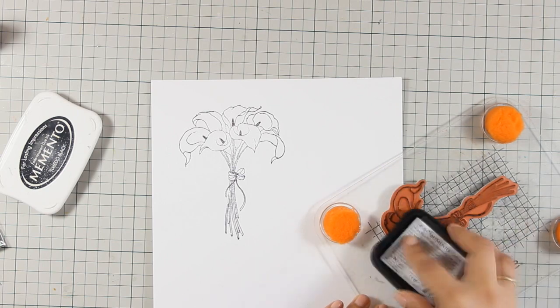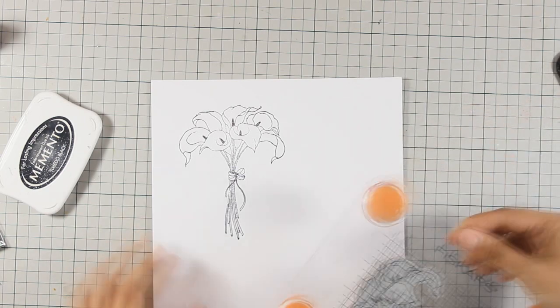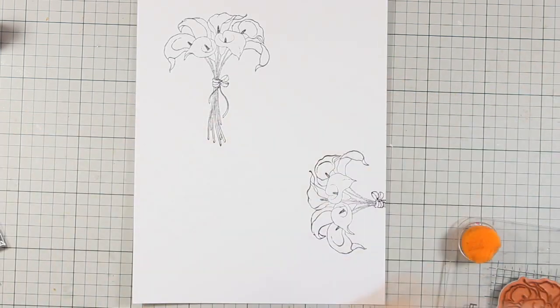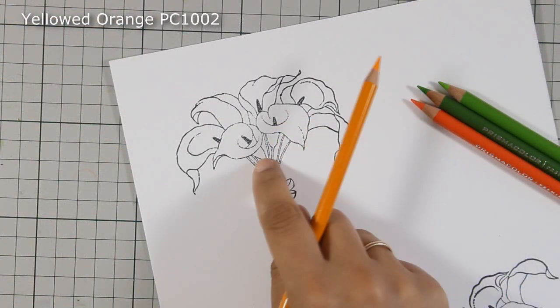To color your flowers you can always use your favorite type of coloring - it can either be your alcohol markers or your watercolors. I decided to go with my Prismacolor pencils.